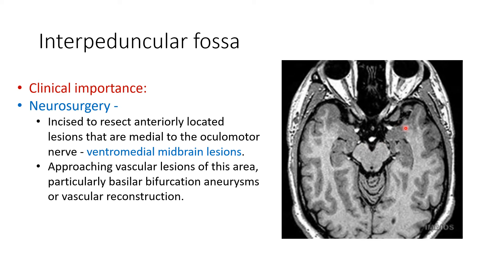This is the interpeduncular fossa, and it is incised to resect anteriorly located lesions medial to the oculomotor nerve, which we call ventromedial midbrain lesions. For their surgery, the interpeduncular fossa is approached. Then for vascular lesions of this area also — particularly the basilar bifurcation — the basilar artery bifurcates into the two posterior cerebral arteries along the upper margin of the pons. If there is an aneurysm or vascular lesion, the approach is through the interpeduncular fossa.